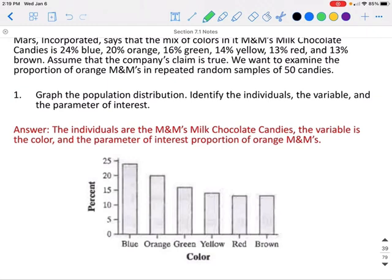In this case, the individuals are the M&M chocolate candies. The variable that we're looking at is the color, and the parameter of interest is the proportion of, in this case, we're going to be looking at which ones are orange M&Ms.